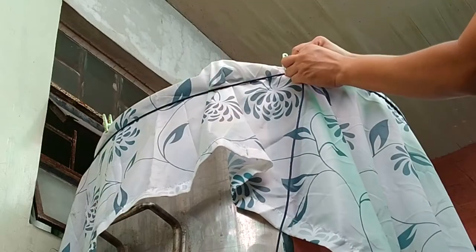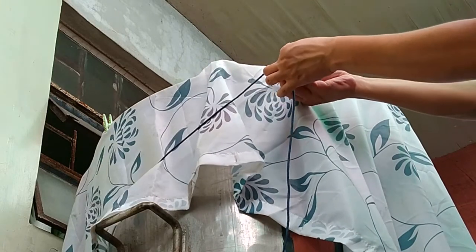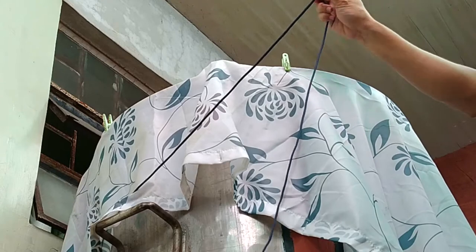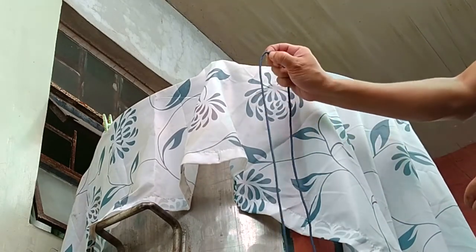And to do that, I wrap a string around the tank, ideally very near the brim, because this is the part where the lid will rest on. With my fingers, I mark the part of the string where it meets itself around the tank. Then I cut it.